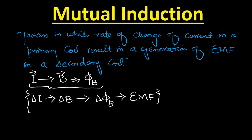So in mutual induction, the rate of change of current in a primary coil results in an induced EMF. We can write mutual induction in a mathematical form as follows.